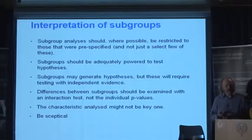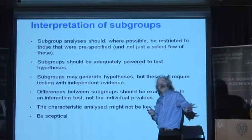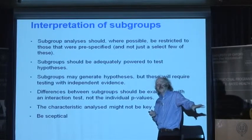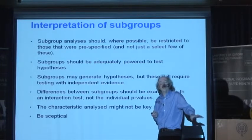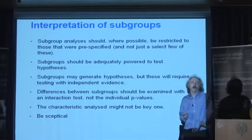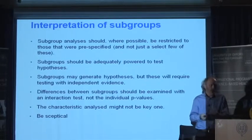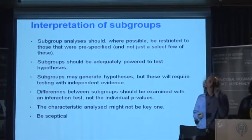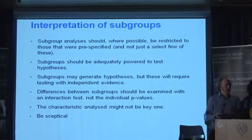Subgroup analyses may generate hypotheses. So what we don't want to do is say to people: unless you wrote it down before you randomised your first patient to your study, you're not allowed to do that analysis. That would stifle hypothesis generation. So we don't want to do that either. But we have to recognise the difference between them.